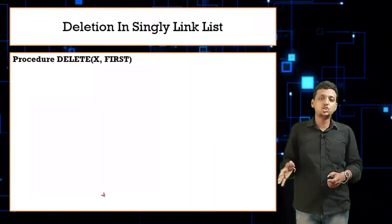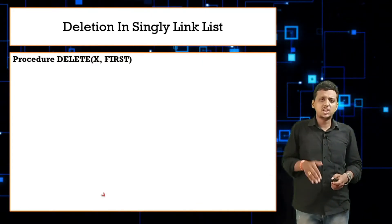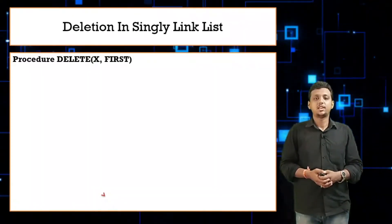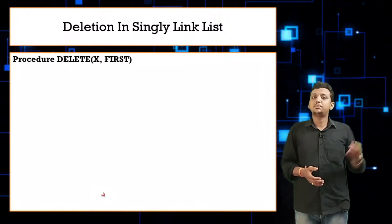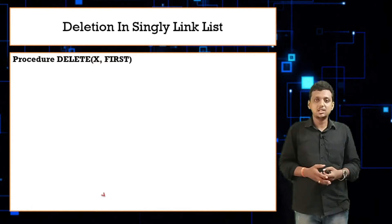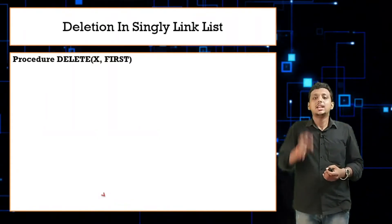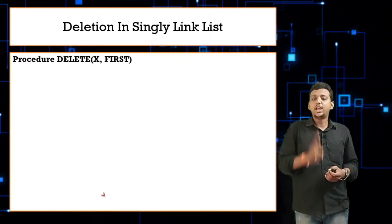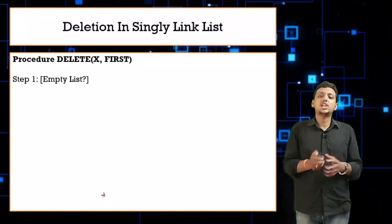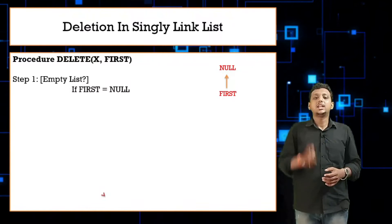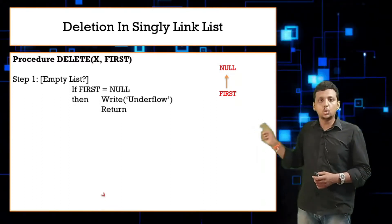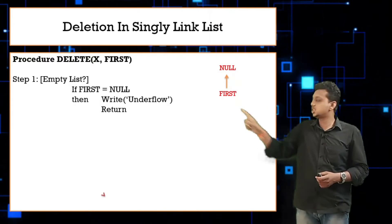The deletion operation begins by checking the underflow condition. If your linked list does not exist, what are you going to do? From all our previous insertion algorithms, we know that when the linked list does not exist, your first pointer is pointing to null. So the first condition is: if first is equal to null, then the linked list does not exist, and we return. Here return is a statement only — I'm not returning any value, so it's a procedure, not a function.